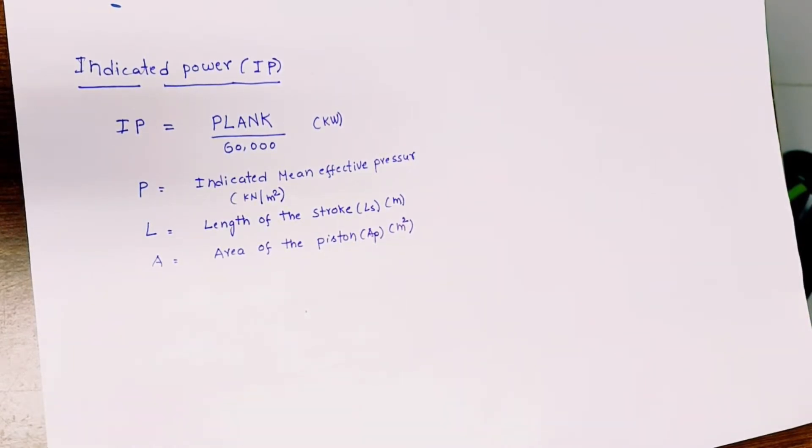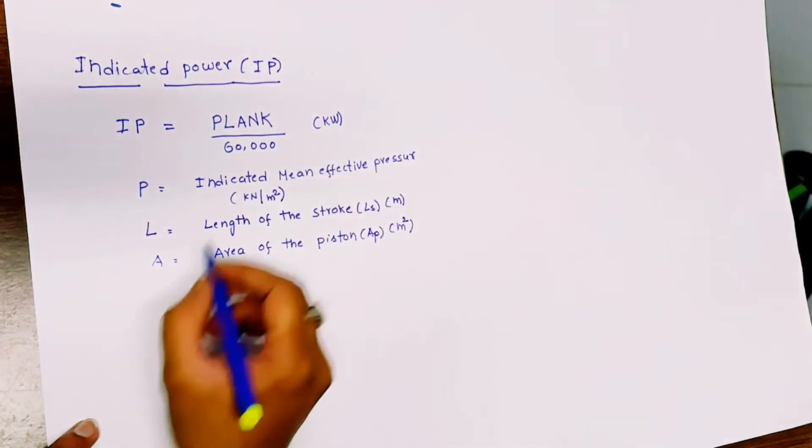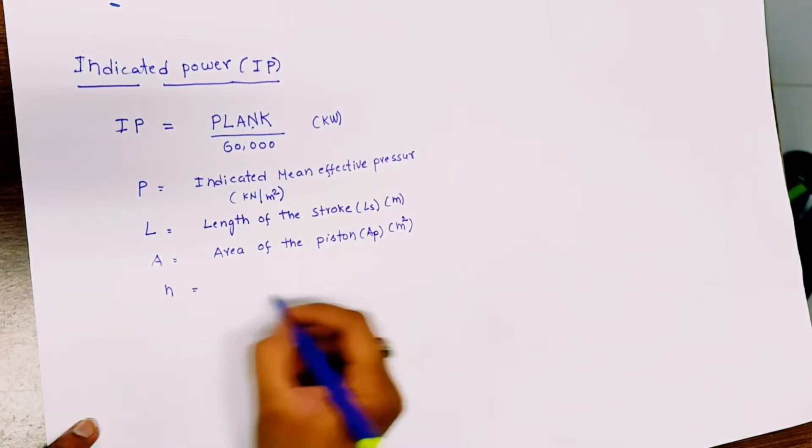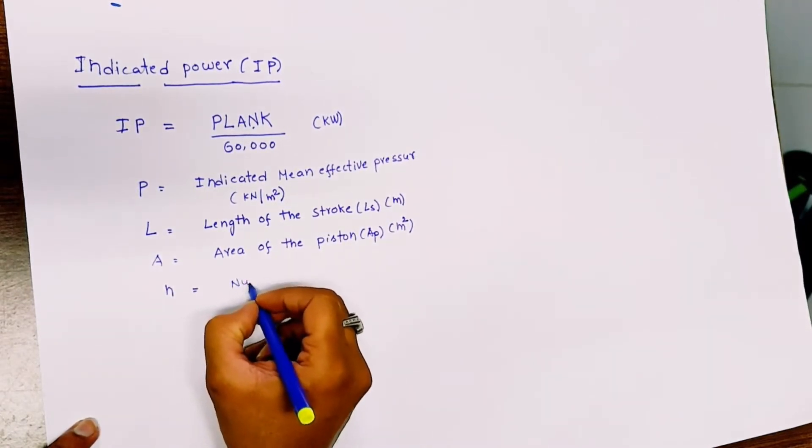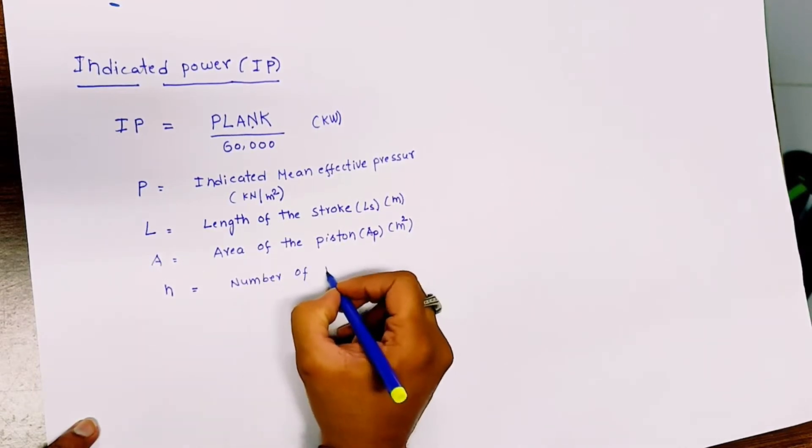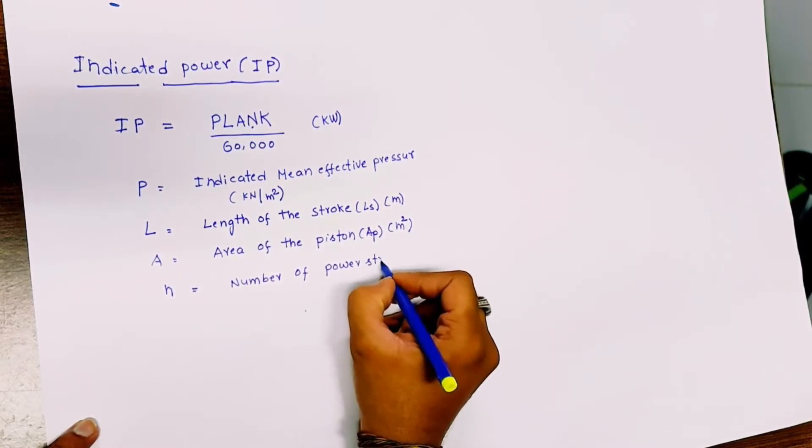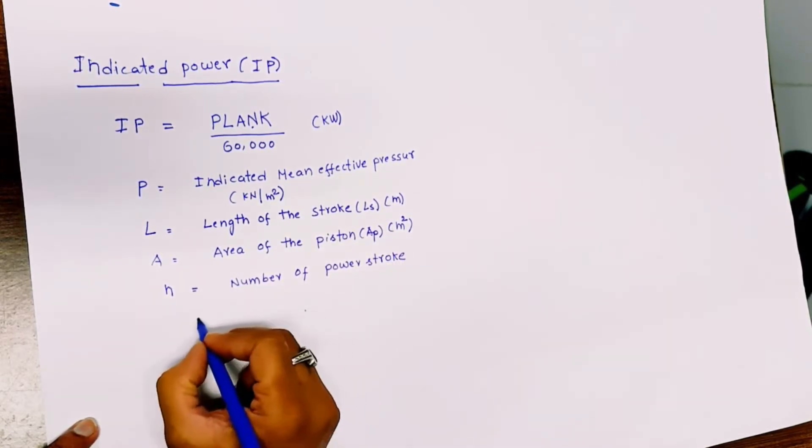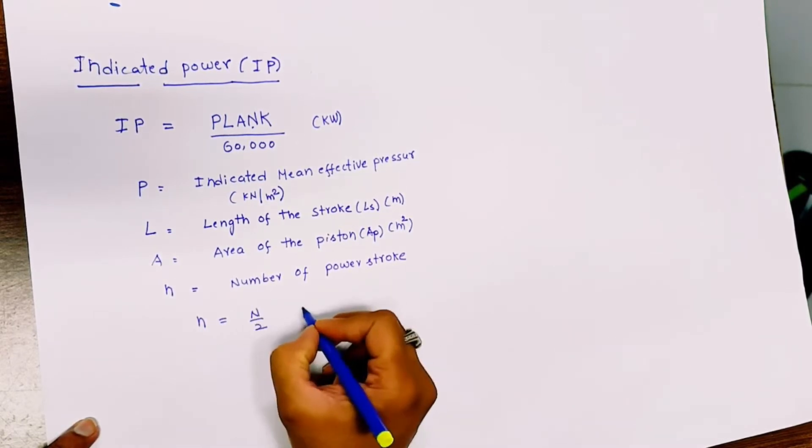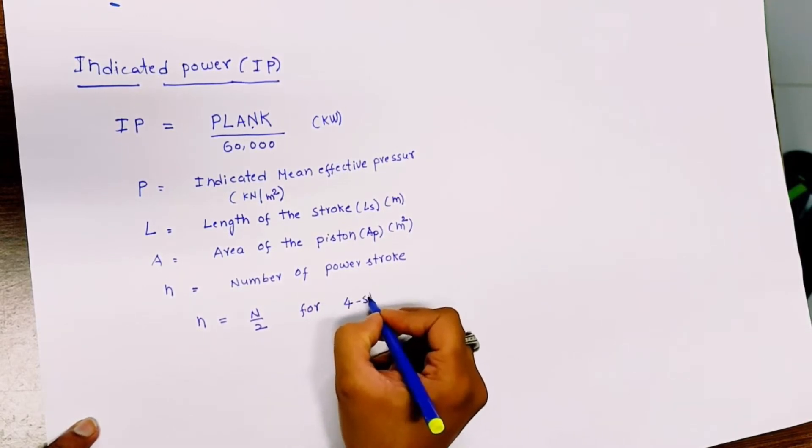n is the small n. The capital N we can replace with small n. First, n equals the number of power strokes. So small n equals N by 2 for a four-stroke engine, as we have seen yesterday.